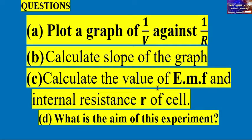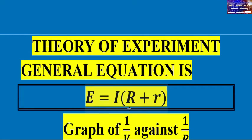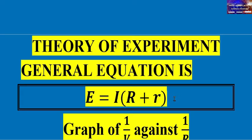We proceed to see the principle and theory of this experiment. We have a standard resistor, a cell with internal resistance, EMF, and current passing through the circuit. Your theory should relate to our circuit. You have to derive the theory in order to know how to solve for the EMF and the internal resistance.